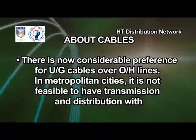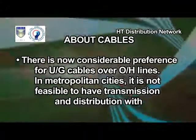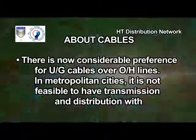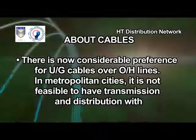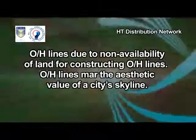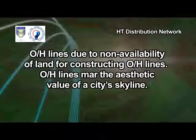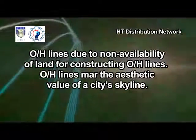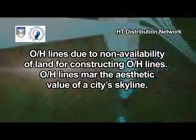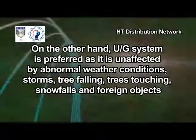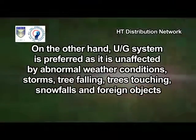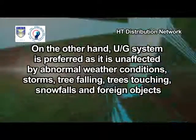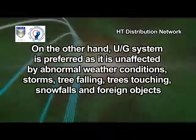There is now considerable preference for UG cables over OH lines. In metropolitan cities, it is not feasible to have transmission and distribution with OH lines due to non-availability of land, and OH lines mar the aesthetic value of a city skyline. UG system is preferred as it is unaffected by abnormal weather conditions — storms, tree falling, trees touching, snowfalls and foreign objects.